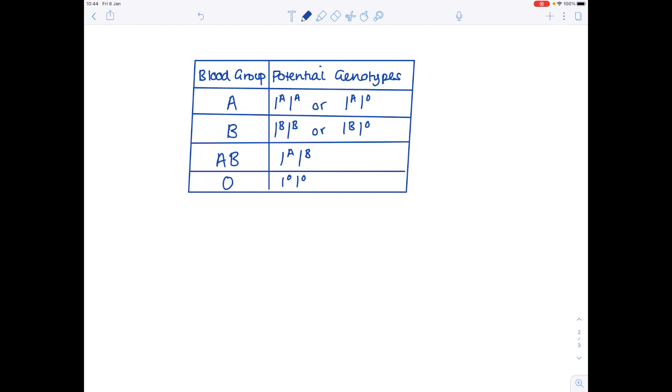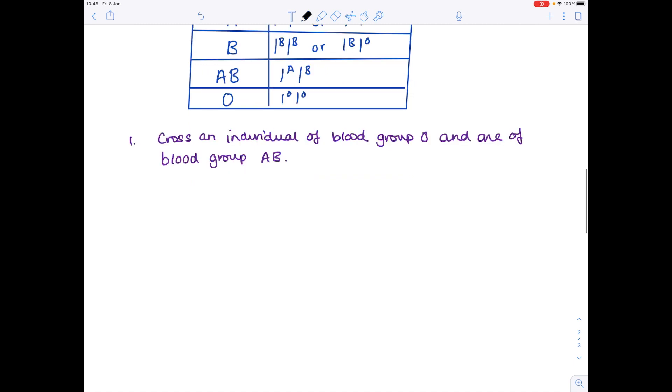So let's look at some test crosses. So in this first cross we're being asked to look at the combination of an individual blood group O and one with a blood group of AB. So let's use the same layout as always in order to work this out. So mother and father it doesn't matter which way around you do it's just for argument's sake we'll do it this way around.